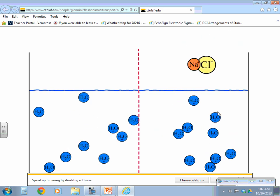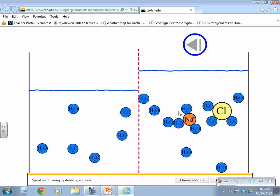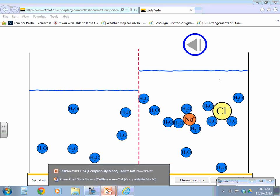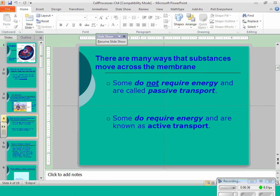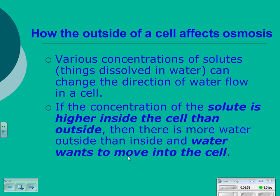If we add salt, the salt binds up some of the water so there seems like there's less water on that side, and the water from the other side moves over to balance the concentrations. Various concentrations of solutes — a solute is something dissolved in water — can change the direction of water flow in a cell. If the concentration of solute is higher inside the cell than outside, like adding salt inside, there would appear to be more water outside than inside, and water will move into the cell causing it to swell.